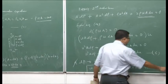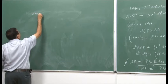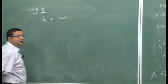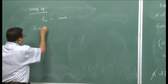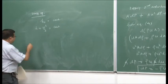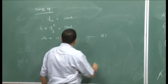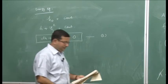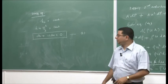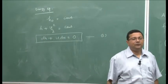Next, let us get the differential form of the energy equation. We have proved that h₀ = h + u²/2 = constant for quasi-1D flow. Differentiating this: dh + u du = 0. This is equation 8, the differential form of the energy equation. So to summarize: equation 4 is the differential continuity equation, equation 7 is the differential momentum equation, and equation 8 is the differential energy equation.